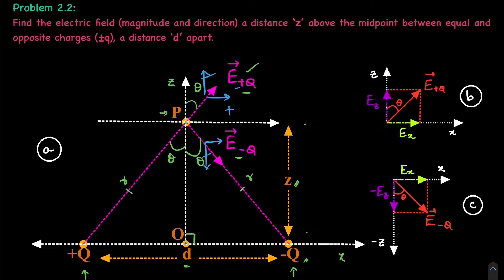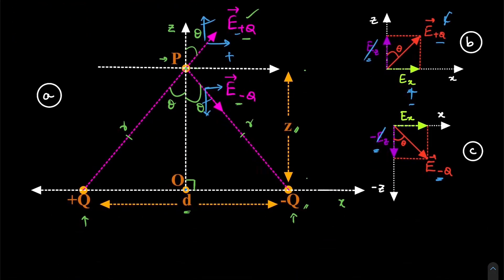So that is what we see in picture b. In picture b, I have split the electric field due to the positive q charge into a z component and an x component. Similarly, in picture c, we have split the electric field due to minus q into a minus z component and an x component. So these z components cancel out, and all that we are left with is a summation of Ex plus Ex.